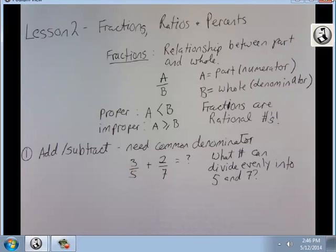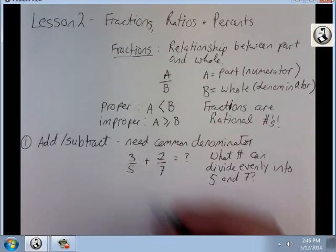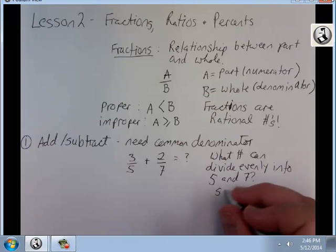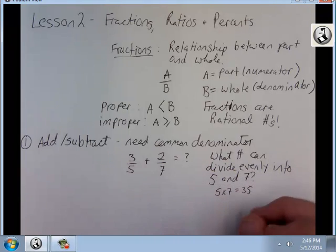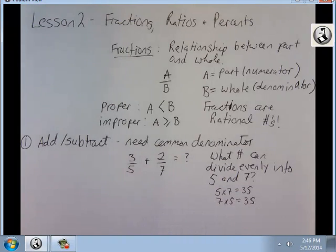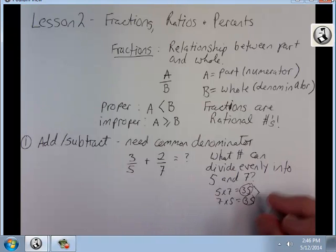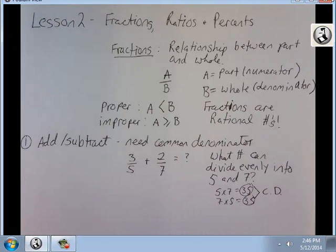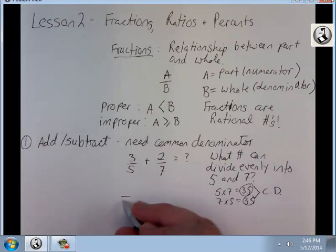I have to think, what number can divide evenly into 5 and 7? That's the question you have to ask yourself whenever you look for a common denominator. Most of the time, you can just multiply your two denominators together. In this case, the first number that divides evenly into 5 and 7 is 35. So 5 times 7 is 35, and 7 times 5 is 35. That tells me what my common denominator is going to be.